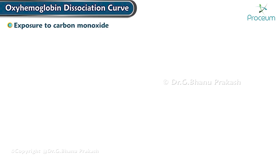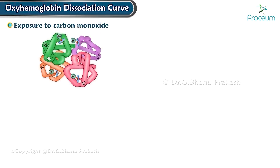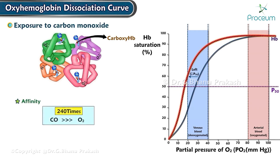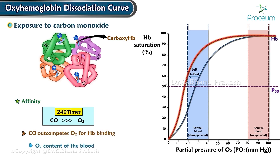Carbon monoxide binds to the heme group of the hemoglobin molecule at the same site as oxygen and forms carboxyhemoglobin, causing a left shift in the oxygen-hemoglobin dissociation curve. The affinity of carbon monoxide for hemoglobin is about 240 times greater than it is for oxygen, meaning carbon monoxide outcompetes oxygen for hemoglobin binding. This means the oxygen content of the blood is drastically reduced because there are fewer hemoglobin binding sites for oxygen to bind to.